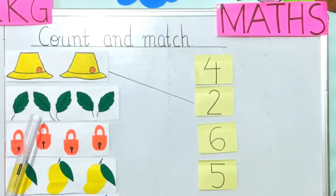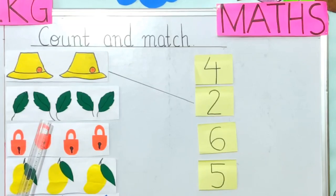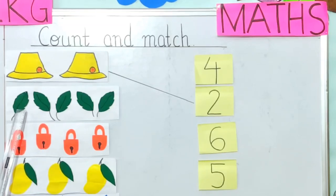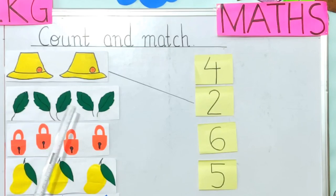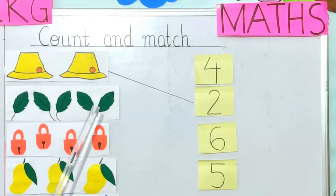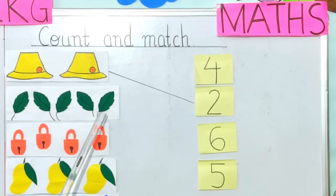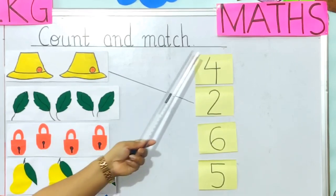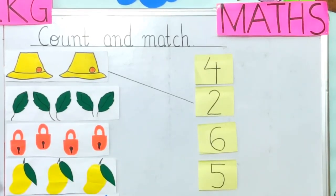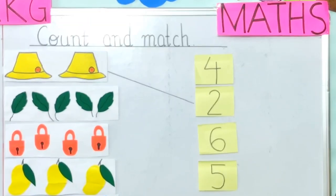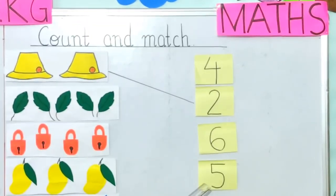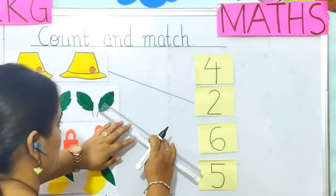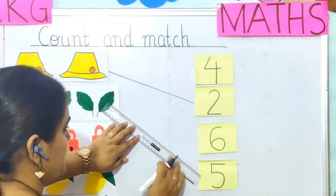The next picture is that of leaves. Let's count: 1, 2, 3, 4, 5. Where is 5 written, children? Yes, it is here. So we will match it with this.